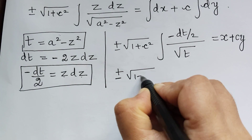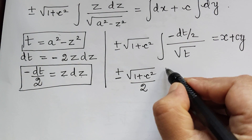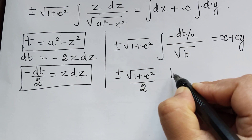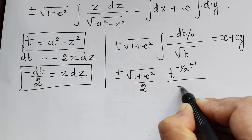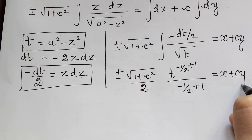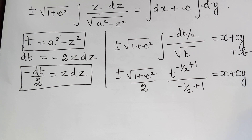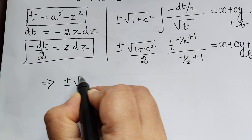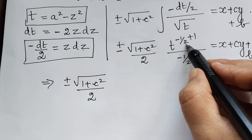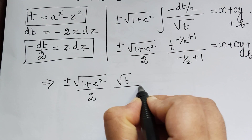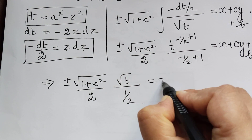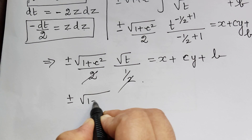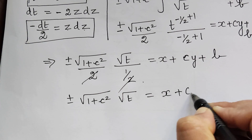So we have plus or minus square root of (1 + c squared) divided by 2, times the integral of t to the power minus 1/2, equals x + cy + b, where b is the constant of integration. Integrating t to the minus 1/2 gives t to the 1/2 divided by 1/2. The 2 and the 1/2 cancel, giving plus or minus square root of (1 + c squared) times square root of t equals x + cy + b.